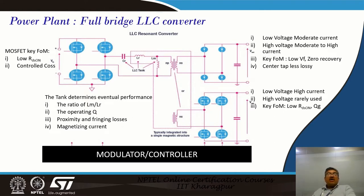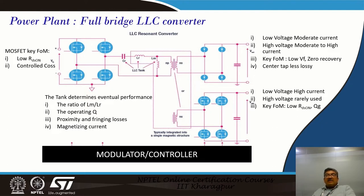Low RDS(on) ensures conduction losses are minimal. Controlled COSS — the output drain capacitance of the MOSFET — ensures ZVS over the entire operating span of the LLC converter. Certain generations of MOSFETs have very controlled COSS, meaning over production tolerances the COSS doesn't vary much, so in a production lot of 10,000 or 1 million converters, the efficiency and switching behavior remains uniform. The magnetics, the resonant capacitor, and the resonant inductor form the tank circuit, which determines the output voltage span, regulation, and efficiency of the converter.